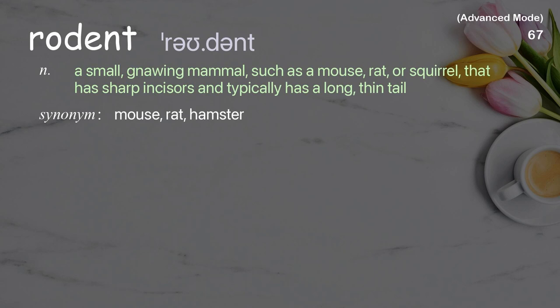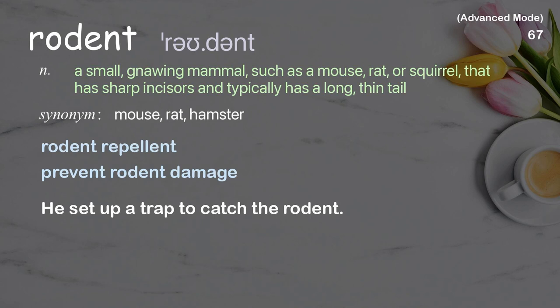Rodent: A small, gnawing mammal, such as a mouse, rat, or squirrel, that has sharp incisors and typically has a long, thin tail. Examples: Rodent repellent, Prevent rodent damage. He set up a trap to catch the rodent.